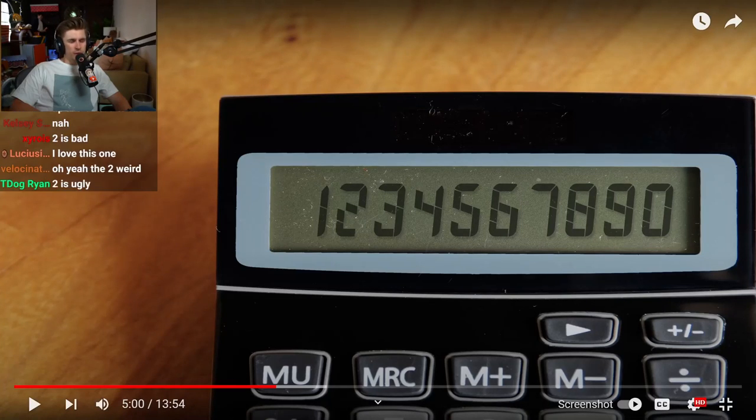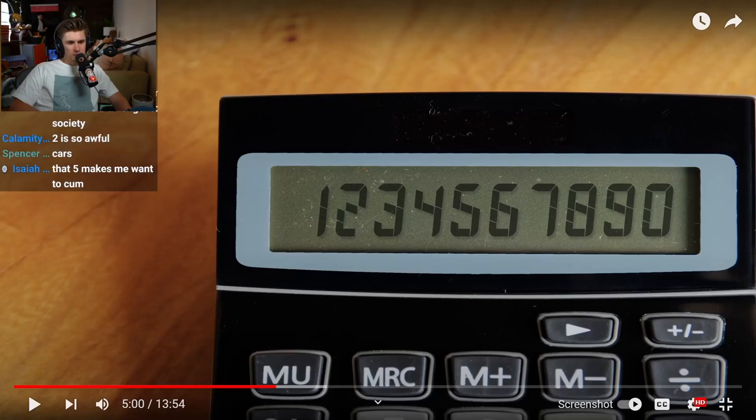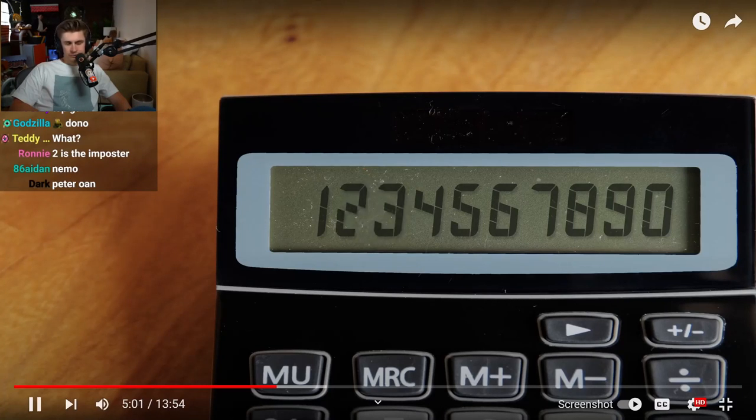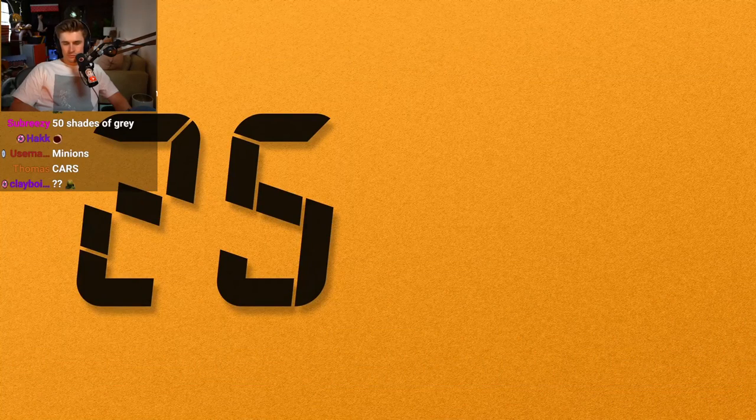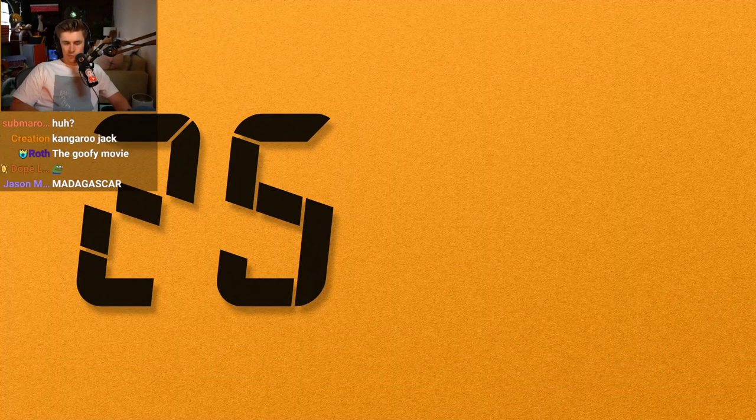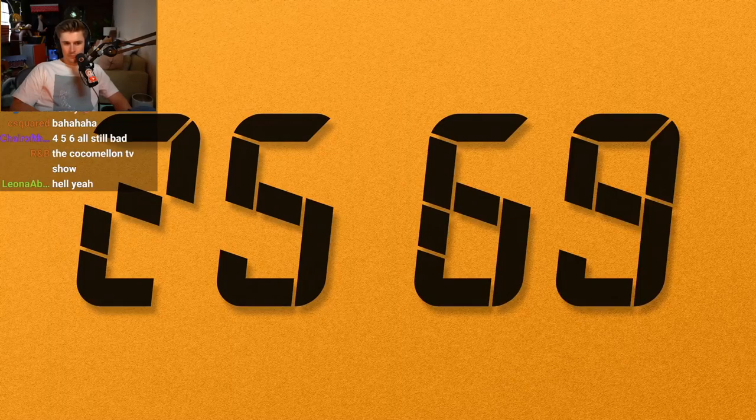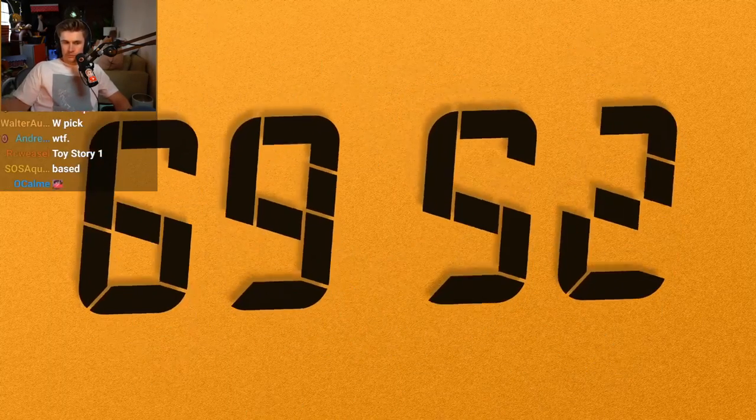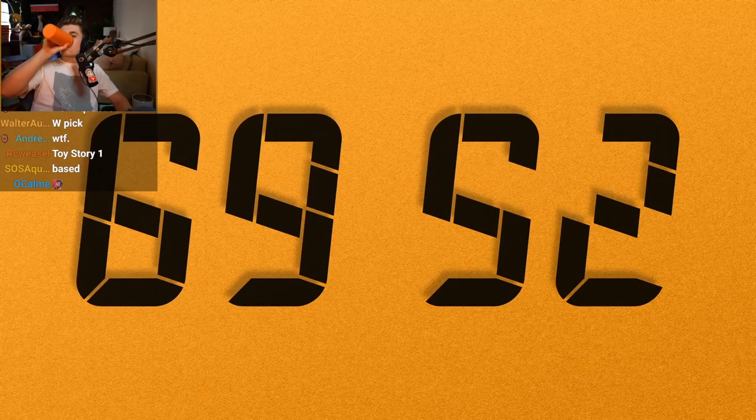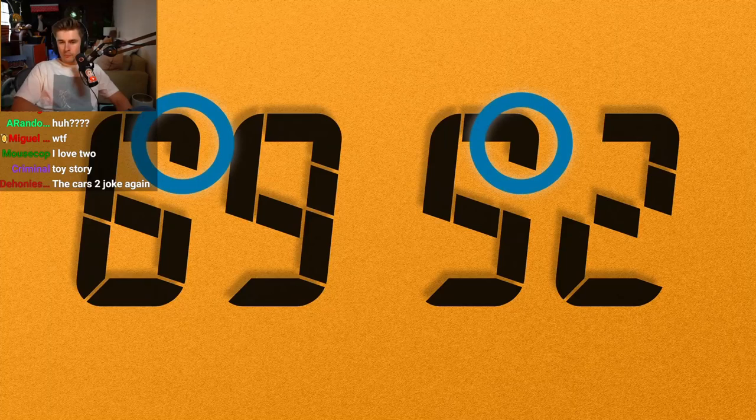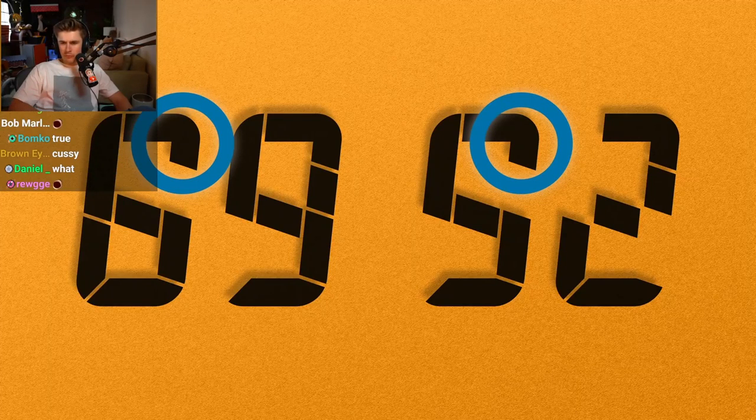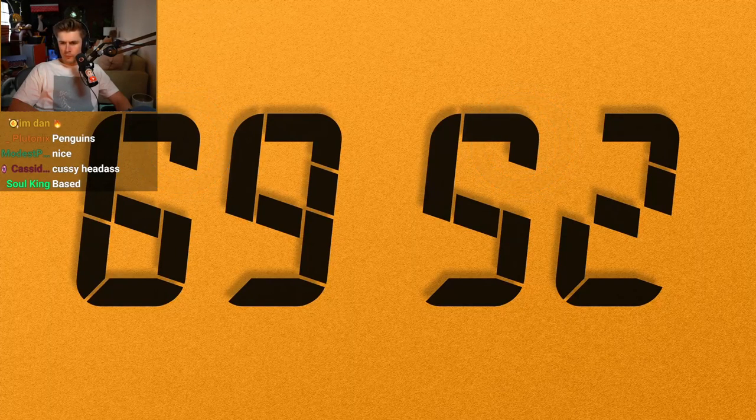On a double square seven segment display you cannot see if the two and five are upside down, and even with normal text the same counts for the six and nine. For certain appliances this is a problem. Even with this design you have to know the font to see it's upside down.